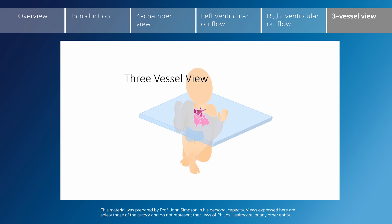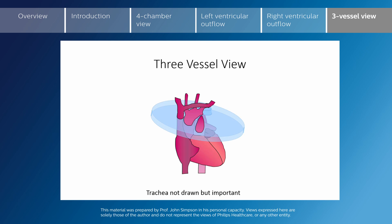Moving to the most superior view is the so-called three vessel view. We have moved above the level of the right ventricular outflow tract and are now cutting these vessels in transverse section: the pulmonary artery and duct, the transverse aortic arch, and the superior vena cava. The three vessel view shows us the V of the pulmonary artery and duct, the transverse aortic arch, and the superior vena cava in short axis.